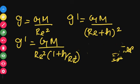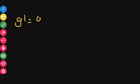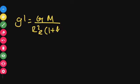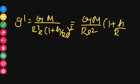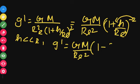Now let's go to the concept. Here the height H is very small compared to the radius of the Earth Re, so we apply the binomial expansion. The binomial expansion says that (1 + x)^n ≈ 1 + nx. So (1 + H/Re)⁻² becomes approximately 1 minus 2H/Re. Therefore g' = GM/Re² × (1 - 2H/Re).